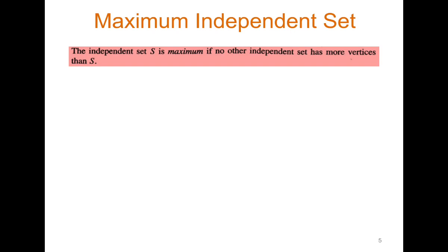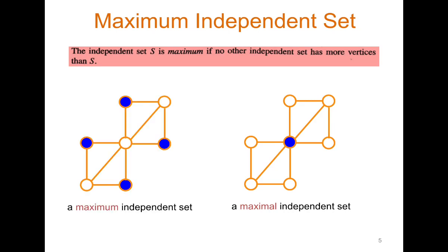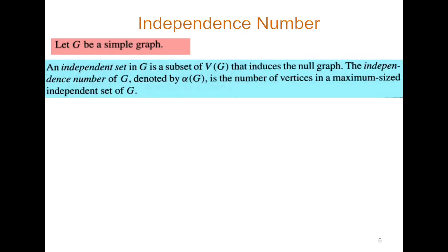A set is maximum if no other independent set has more vertices. This is an interesting distinction: a maximal independent set may have only one vertex while for the same graph the maximum independent set has four vertices. We can now define the independence number. Note the notation: the clique number is ω(G), while the independence number is α(G) — the number of vertices in a maximum-sized independent set.